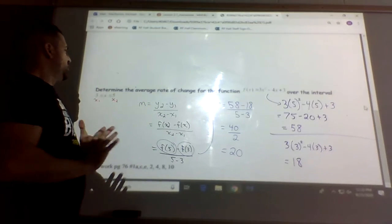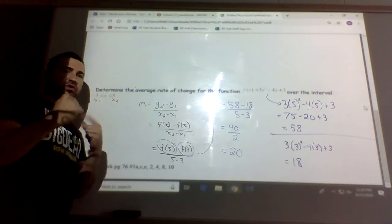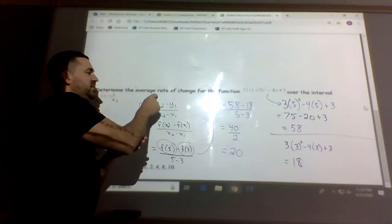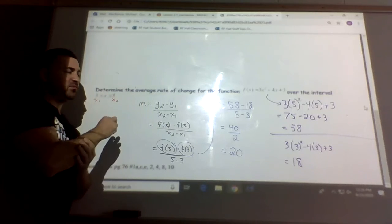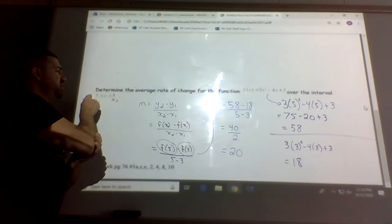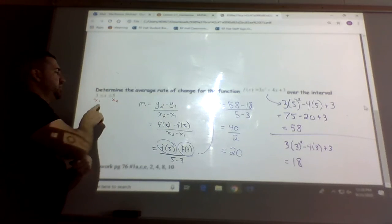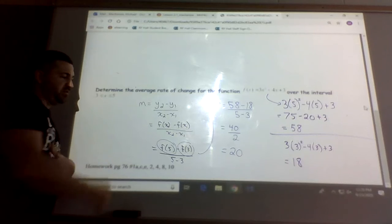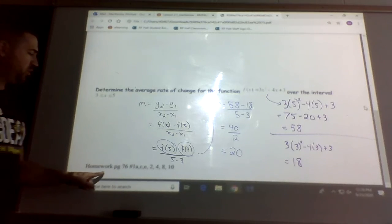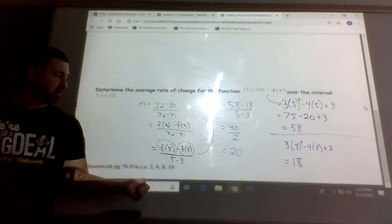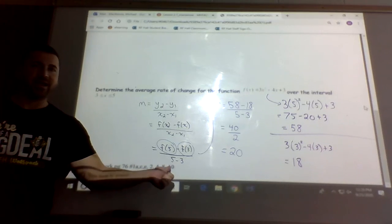So again, in the future to identify whether it's average or instantaneous, well first of all if it says average then use the average formula, but for averages they also give you a range of values and or they'll give you a chart. So that's how we do it. So homework here, page 76, 1A, C, and E, 2, 4, 8, and 10.